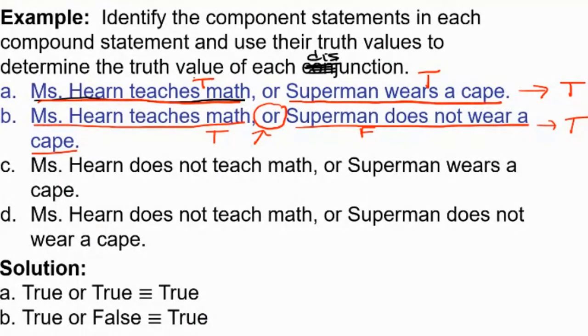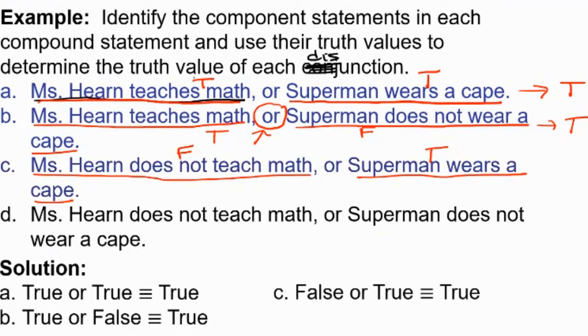Okay, so how about if I say in part C, Ms. Hearn does not teach math or Superman wears a cape. This means Ms. Hearn does not teach math, that's false. But Superman wearing a cape is true, right? So we have false or true. So am I lying if I say that to you? No, because I'm only guaranteeing that one of them is true. Very good. So that means that this statement, false or true, is going to still be true.